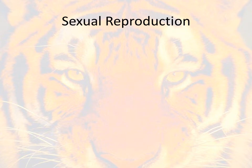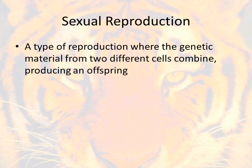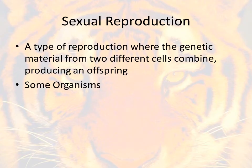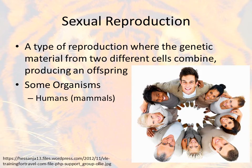Now let's switch over to sexual reproduction. This is a type of reproduction where the genetic material from two different cells combine to produce an offspring. Some sample organisms include us as humans and other mammals, which reproduce through sexual reproduction.